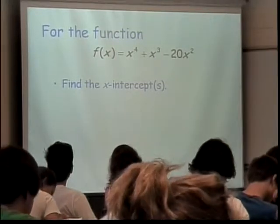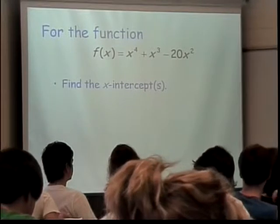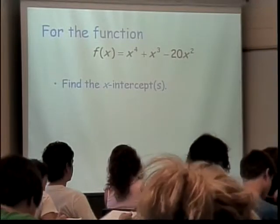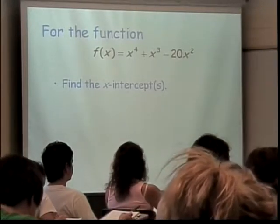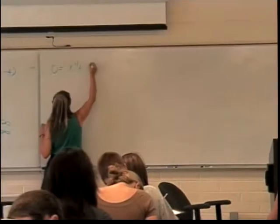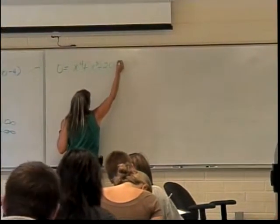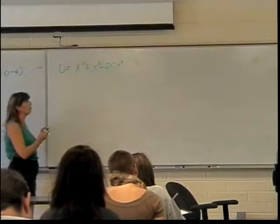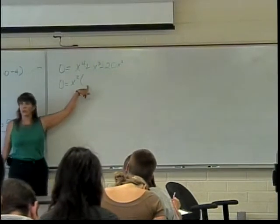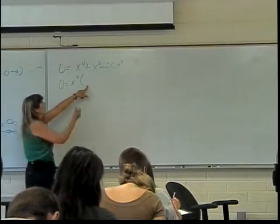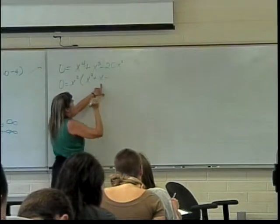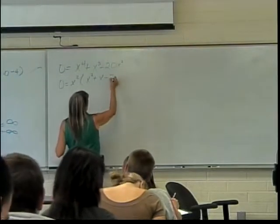Factor out an x squared. I can factor out an x squared. So I set the whole thing equal to 0, and that's going to be for x to the fourth plus x cubed minus 20 x squared. And then to make this solution nice, I'll just solve by factoring out that x squared. So I'll have 0 equals x squared times, when I factor x squared out of x to the fourth, I have x squared. When I factor it out of x cubed, I end up with x. And when I factor it out of 20 x squared, I end up with minus 20 here.